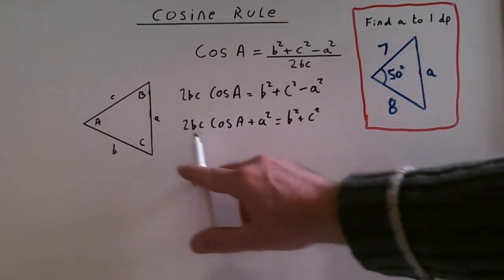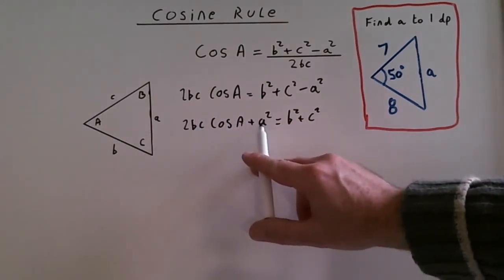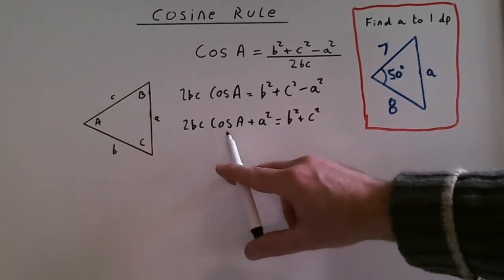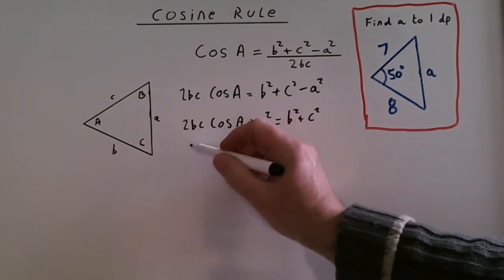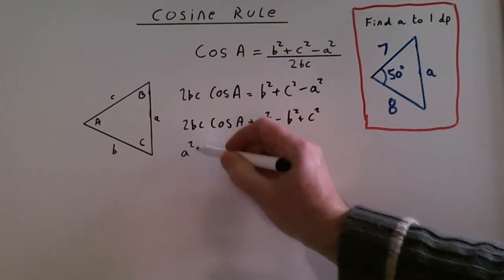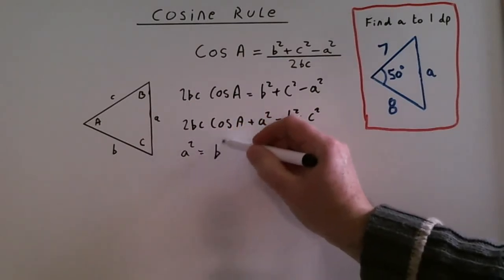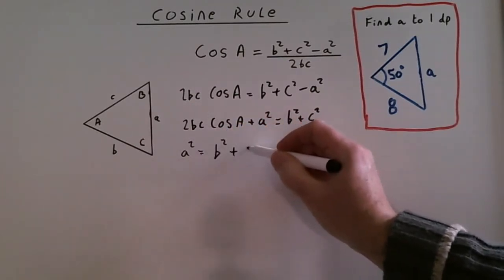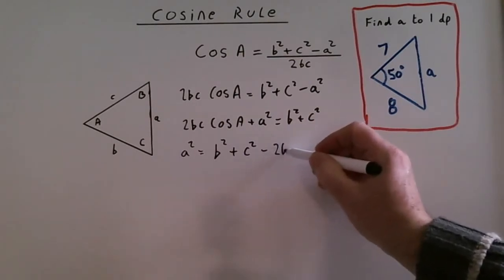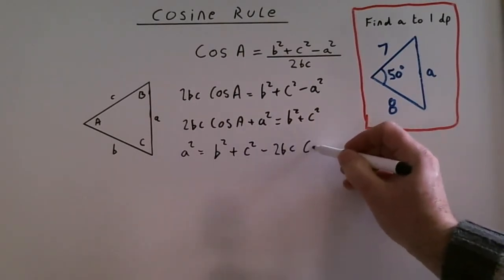So I can get rid of this, leaving a squared on its own, by subtracting 2bc cos A. Do that from both sides. So we're left with a squared equals b squared plus c squared minus 2bc cos A.